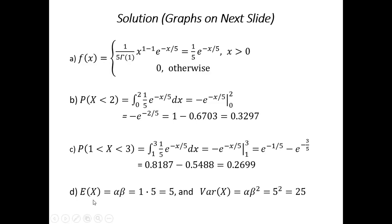Now, we know that the mean of x or the expectation of x for gamma is alpha times beta. We're given alpha is 1. Beta is 5. So, we get 5. And the variance for x is alpha times beta squared, which gives us 5 squared, or 25.